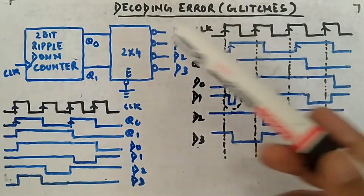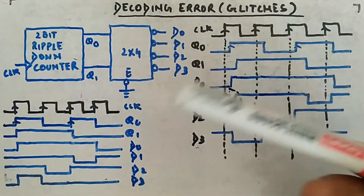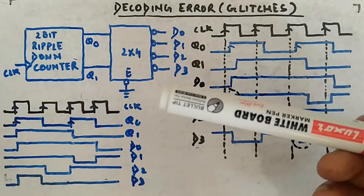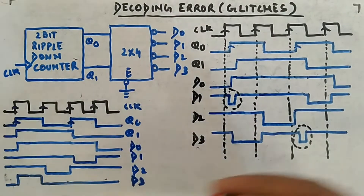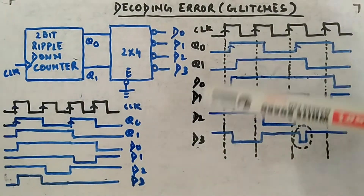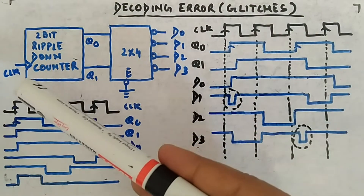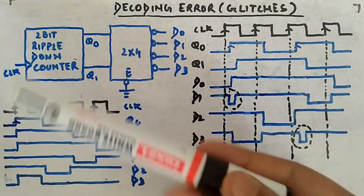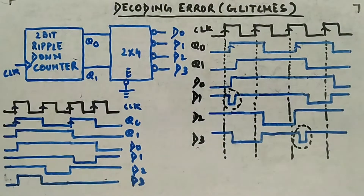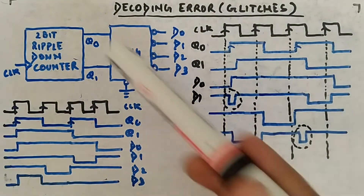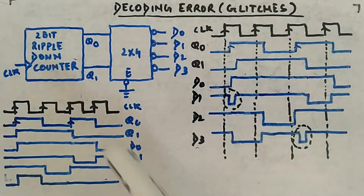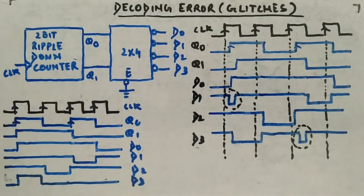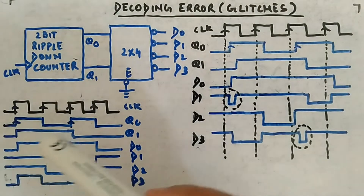That is how the decoder works, and you will see why I have taken a decoder — just to show you these glitches, this decoding error, that's why it is called decoding error. Ideally, what should be the output? And with delay, what will the output be? Practically, both flip-flops will have tpd — propagation delay — and this will be the actual output versus what was ideally expected.